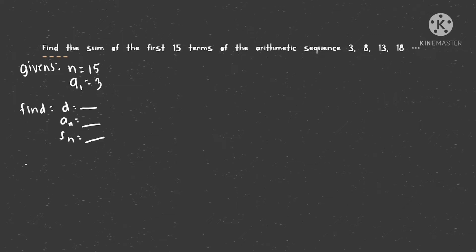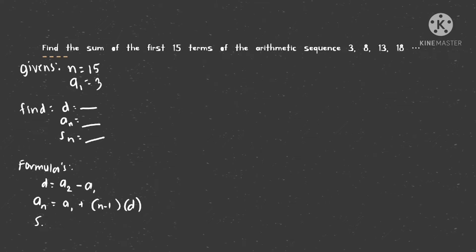What are the formulas? There are three formulas. First, the common difference d equals a sub 2 minus a sub 1. Our nth term: a sub n equals a sub 1 plus n minus 1 times d. Then the partial sum is n divided by 2 times a sub 1 plus a sub n.